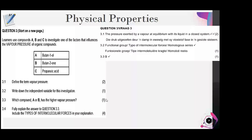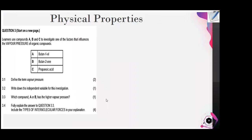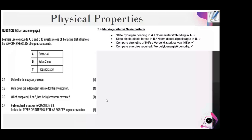Vapor pressure is like testing deodorants or perfumes in a store — you spray it on your hand and it evaporates quickly. That rapid evaporation is an example of high vapor pressure. Now we move on to organic reactions. A flow diagram represents the conversion of propane to propan-2-ol by a two-step process. Step one requires heat or ultraviolet (sunlight) light as the reaction condition. The inorganic product formed in step one is hydrogen bromide (HBr).